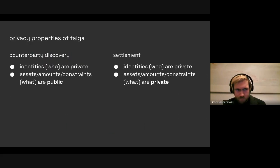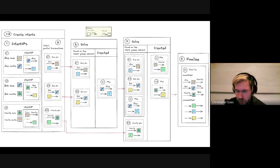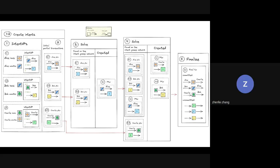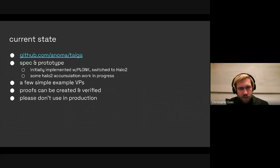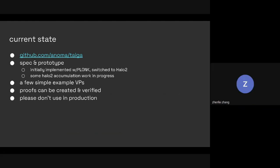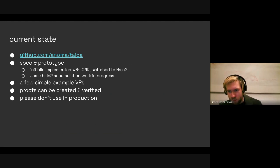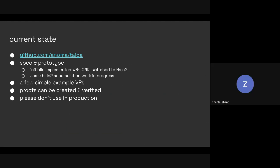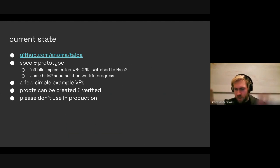On Taiga's performance versus Zexi and VeriZexi: currently with four input and four output notes, proving takes two seconds with Halo 2. It took 18 seconds with Plonk, so Halo 2 was a great speedup. That's for the outer circuit. The inner circuit proofs can be constructed in parallel, so it's not all sequential — and we expect they're generally constructed by separate parties.